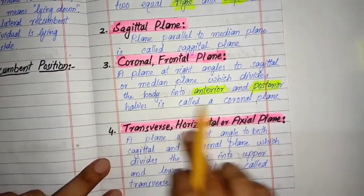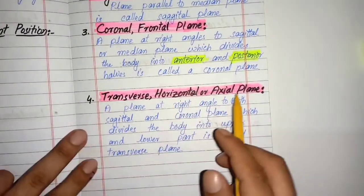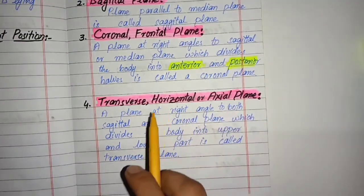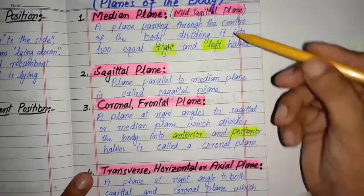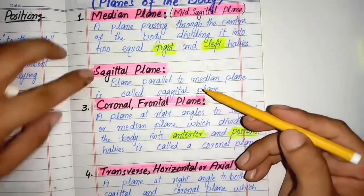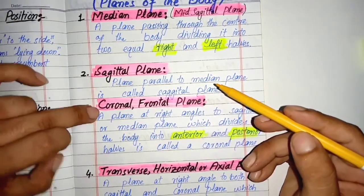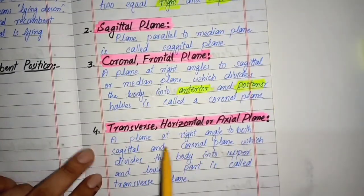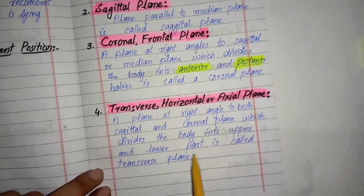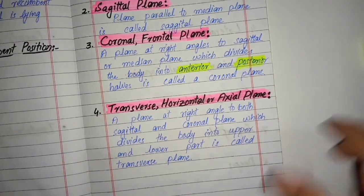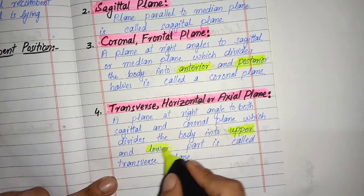The third plane we have is the transverse plane, which is also called the horizontal plane or axial plane — so these three names are very important. It is a plane at right angles to both the sagittal and coronal planes. The median and sagittal planes are parallel to each other, and the transverse plane is at right angles to both the coronal and sagittal planes. It divides the body into upper and lower parts.